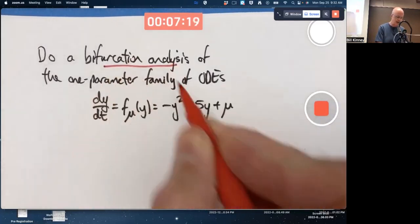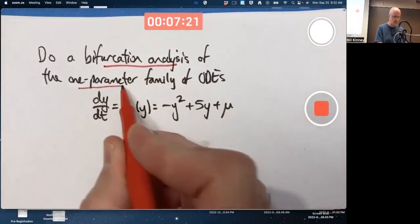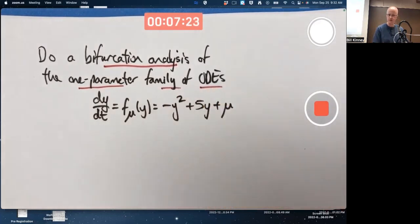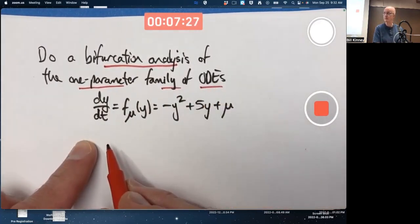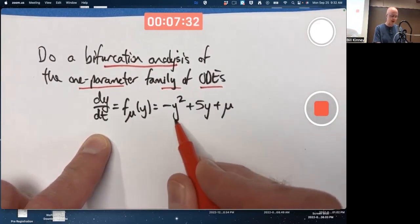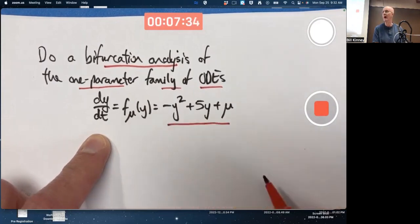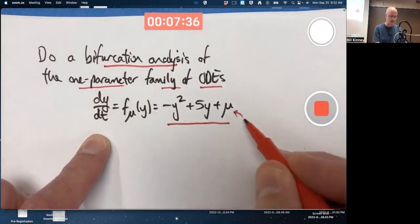We're doing a bifurcation analysis of this one-parameter family of ordinary differential equations, first order, meaning at most a first derivative, not a second derivative or a third derivative. And we've got a right-hand side function that not only involves the dependent variable y, but also involves a parameter mu.